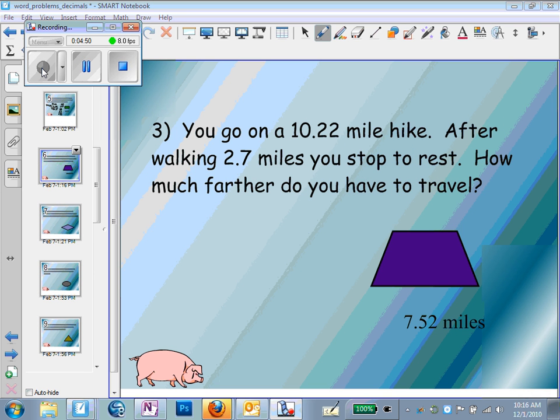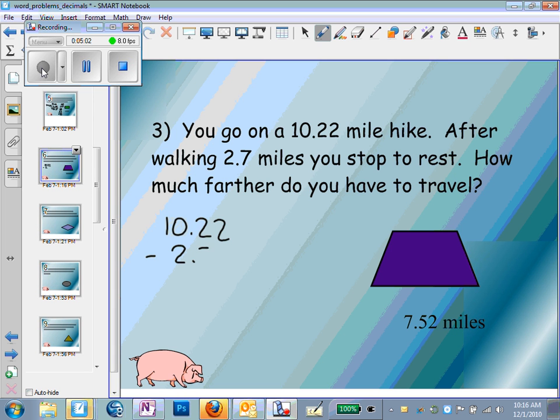Andre walked 10.22 miles on a hike. After walking 2.7 miles, he stopped to rest. How much farther does he have to walk? That's 10.22 miles minus 2.7 miles. 2 minus 0 is 2. Borrow from the 12, that becomes 9. 12 minus 7 is 5. And 9 minus 2 is 7. So 7.52 miles.